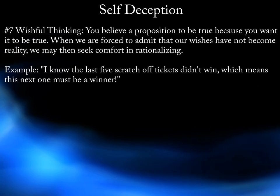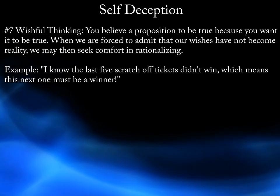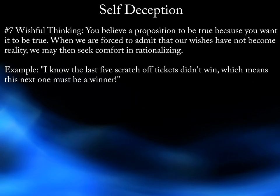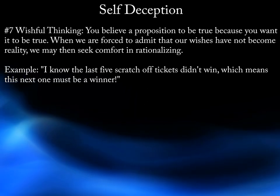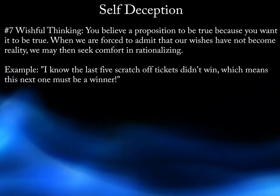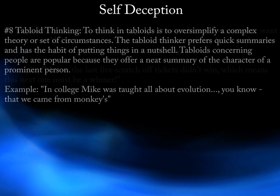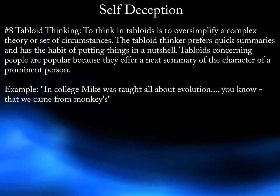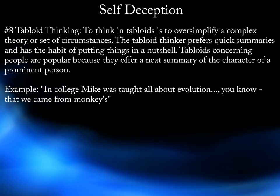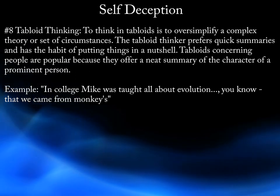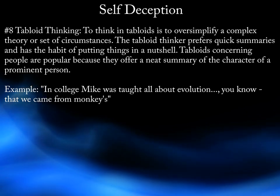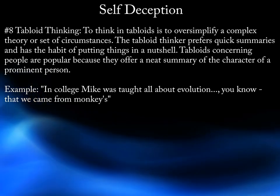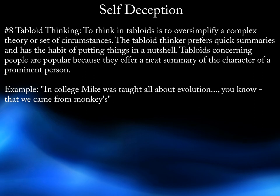7. Wishful Thinking. You believe a proposition to be true because you want it to be true. When we are forced to admit that our wishes have not become reality, we may then seek comfort in rationalizing. Example: "I know the last five scratch off tickets didn't win, which means this next one must be a winner." 8. Tabloid Thinking. To think in tabloids is to oversimplify a complex theory or set of circumstances. The tabloid thinker prefers quick summaries and has the habit of putting things in a nutshell. Example: "In college Mike was taught all about evolution. You know, that we came from monkeys."